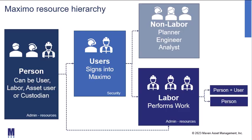We're going to start today with an overview of the resource hierarchy in Maximo. On the far left is the person application. In the person application, we have records for any individual who might be a Maximo user. They may be a labor individual or a craftsman, or they might be an asset user or a custodian. Person records may be people in your organization or external to it. To find this application, it's located under administration resources. A subset of persons are the Maximo users — these are the individuals who sign into Maximo and access the various applications. You'll find these individuals under the security module, because this is where we grant them access to the individual applications.